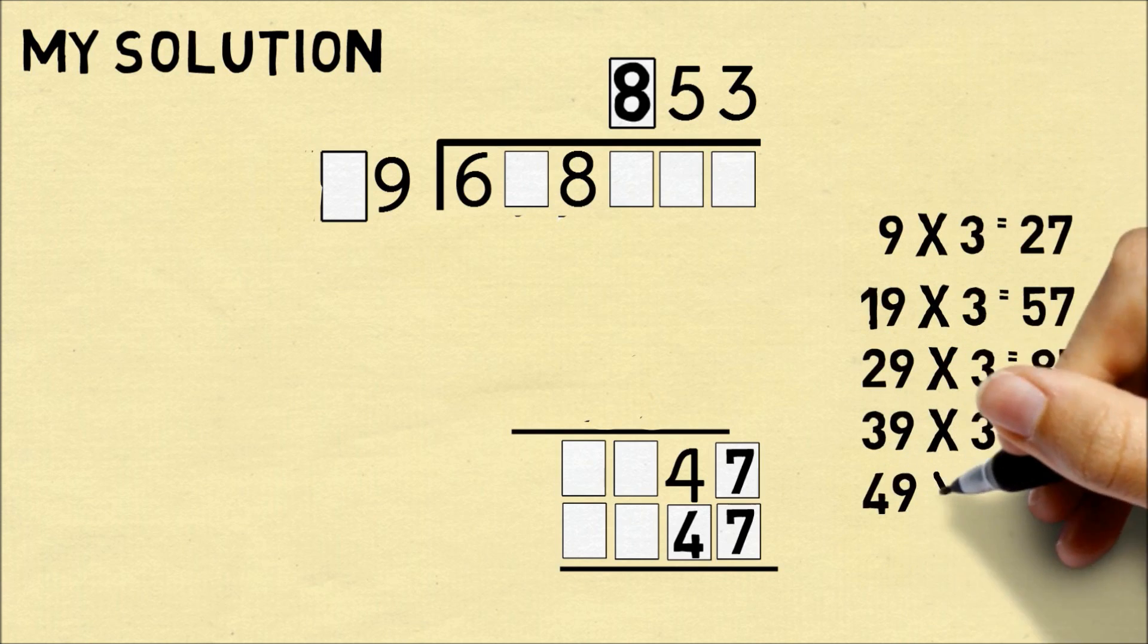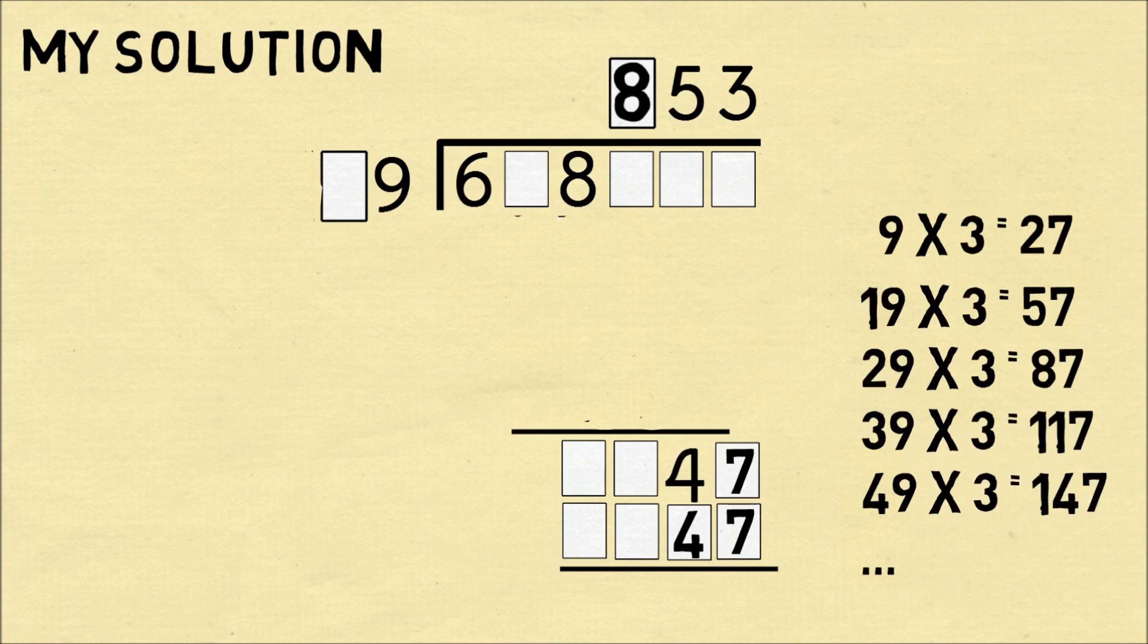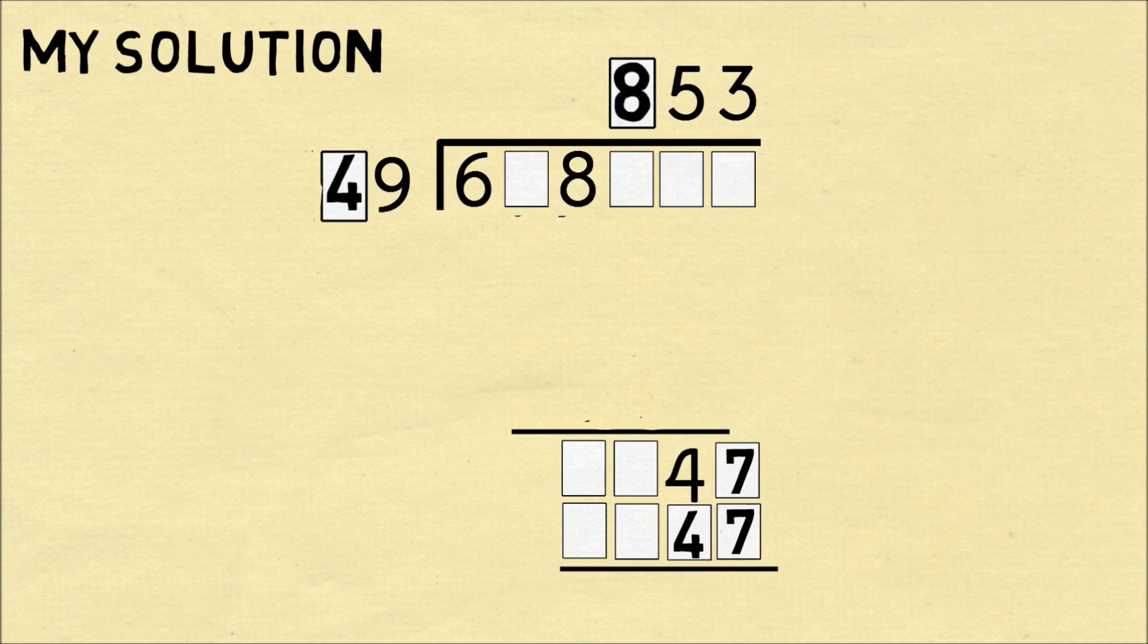So now we need to figure out something that has like 19, 29, and so on, multiplied by three that'll have the last two digits of four and seven. Going through the possibilities, the only way this will happen is if we have 49. So we can already deduce the second digit will be a four.